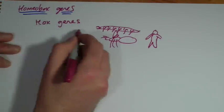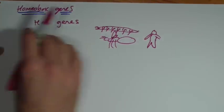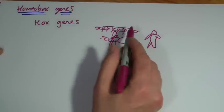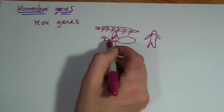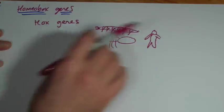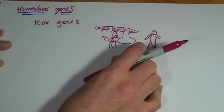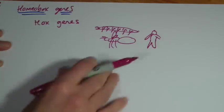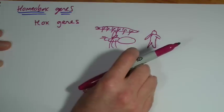And homeobox genes seem to be quite common right the way through. So even if you're looking at an insect, you can put homeobox genes in from a completely different organism, like a frog or something, and they would still continue doing exactly the same job.